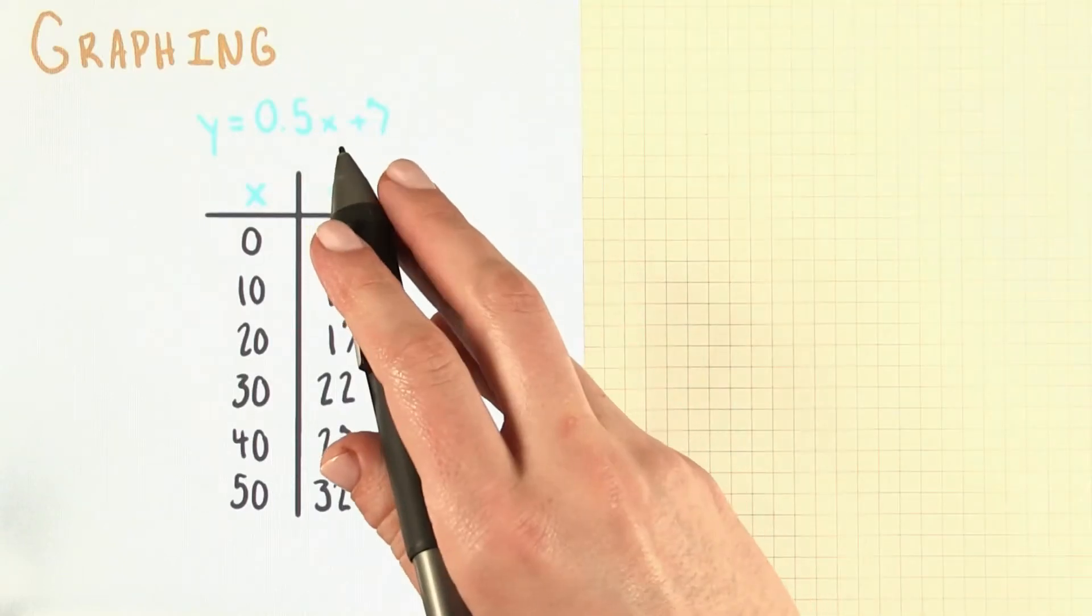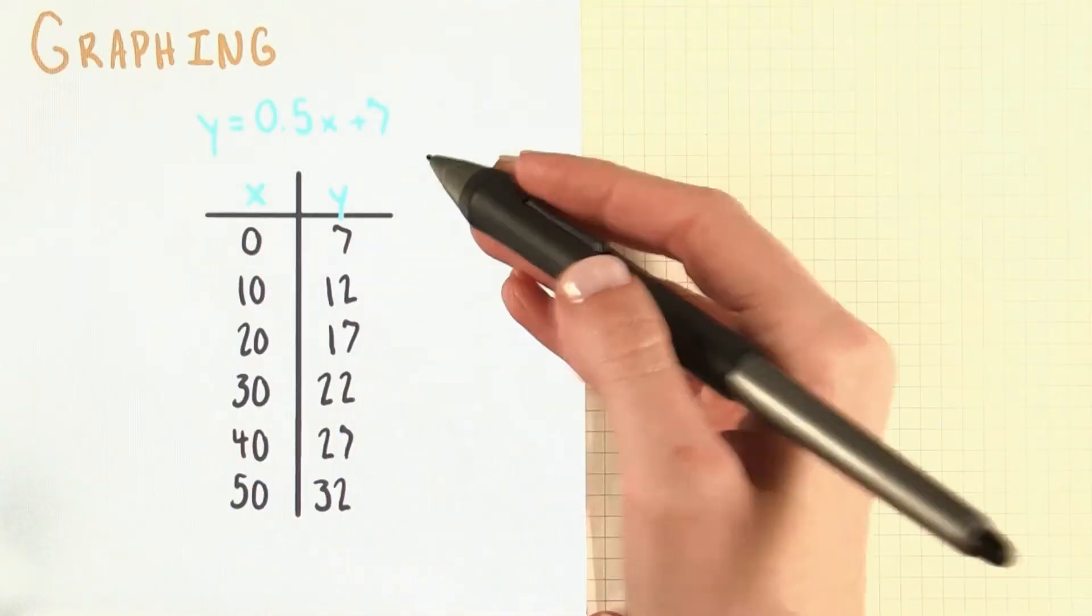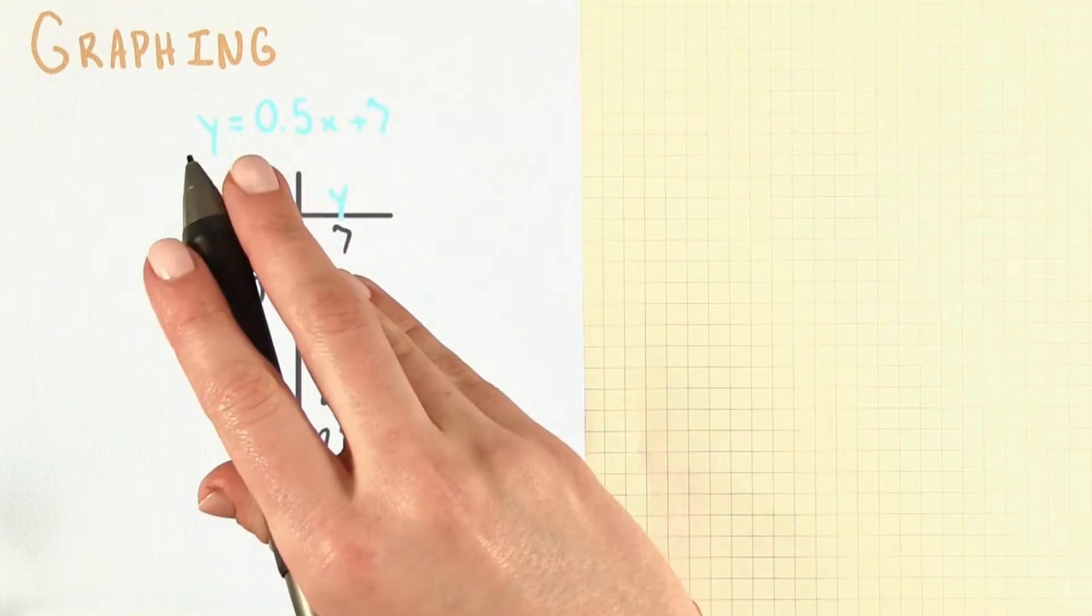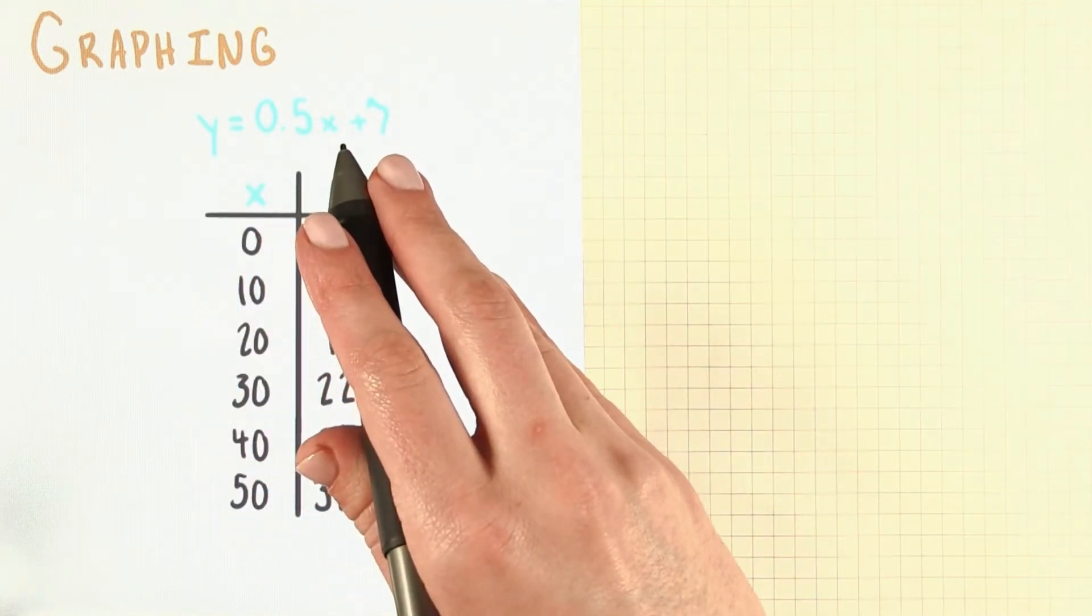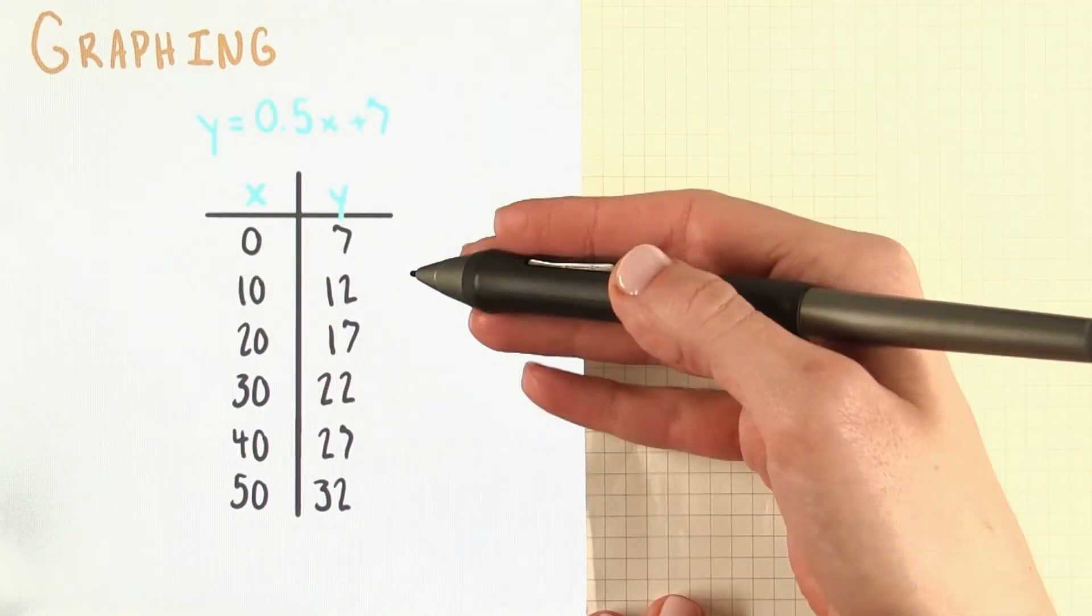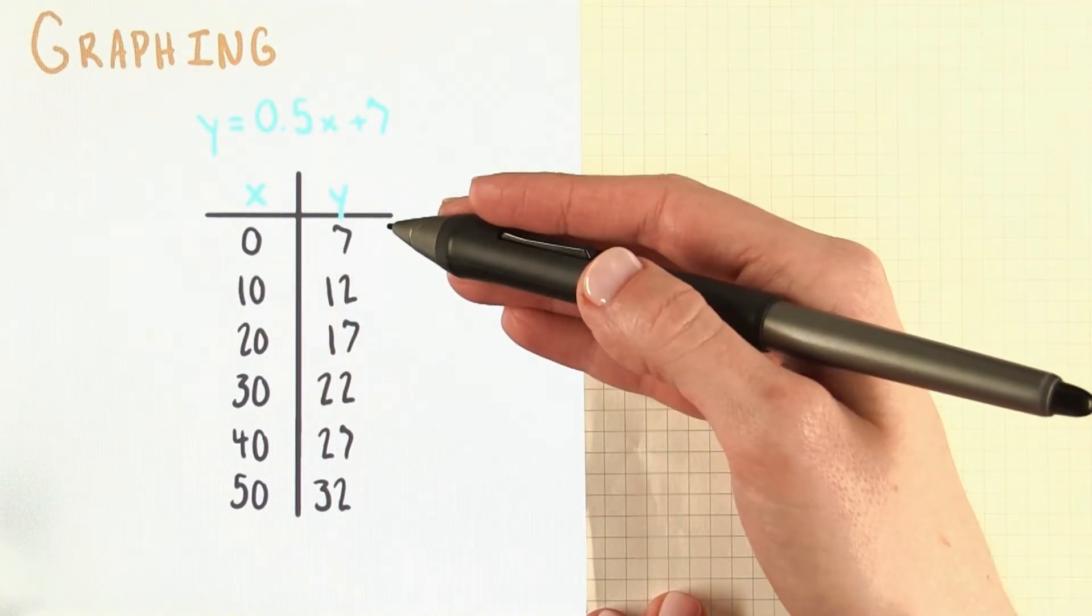Now that we've talked a bit about how our variables x and y are related in this equation we've developed for the total weight of the suitcase, depending on the number of glasses wiper sets that Grant puts in it, I think that the next step to further understand the relationship here is to graph our equation.